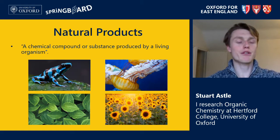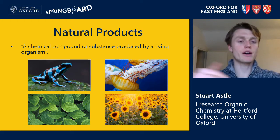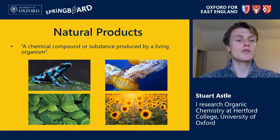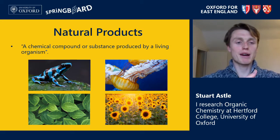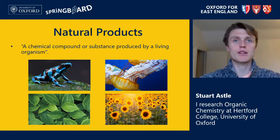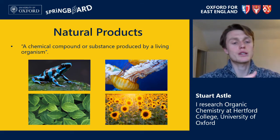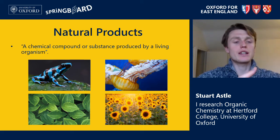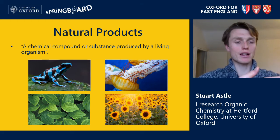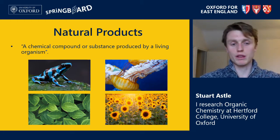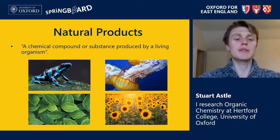So what do we mean by the phrase 'natural products'? Chemists would define a natural product as a chemical compound or substance produced by a living organism. If we stop and think about how many millions of organisms there are on earth and how many different chemical compounds each organism produces, this leaves us with an absolute myriad of natural products — whether they're plants, animals, fungi, bacteria, you name it.